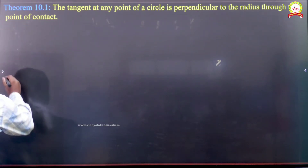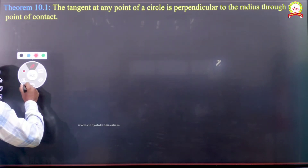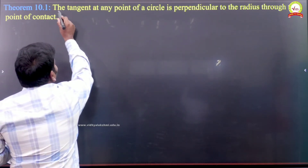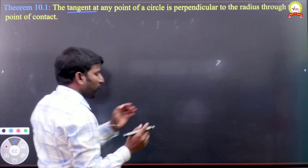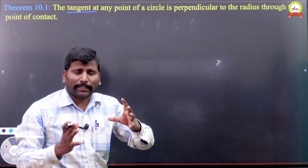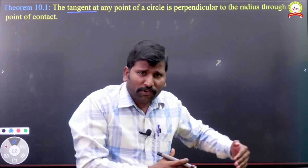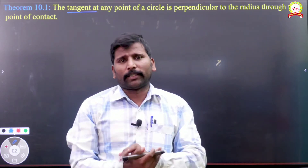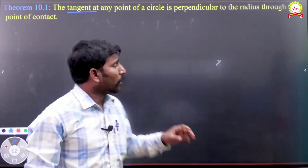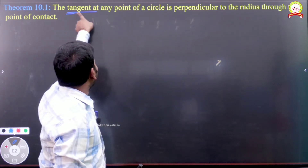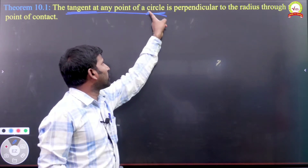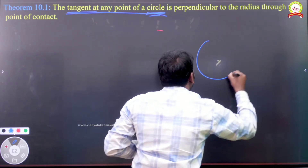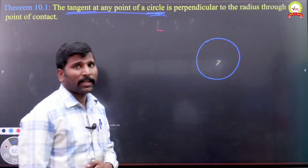Theorem 10.1. Before that, I am going to draw a circle. The tangent — in the sense we need a circle. The tangent definition: the straight line when you draw it intersects a circle at one point, that is called a tangent, we know very well. So they said the word tangent. Tangent means we need a circle. I am going to draw a circle first.